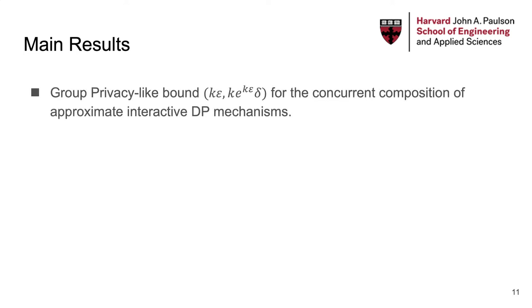To the best of our knowledge, this work is the first to tackle the problem of concurrent composition of interactive differential privacy. Here are our main results. We derive a bound that is similar to group privacy. For the concurrent composition of pure interactive DP, privacy degrades at most linearly with the number of mechanisms concurrently executed, which is the same as non-interactive DP. However, for concurrent composition of approximate interactive DP mechanisms, it is worse than even the basic composition theorem of non-interactive DP in the delta term.